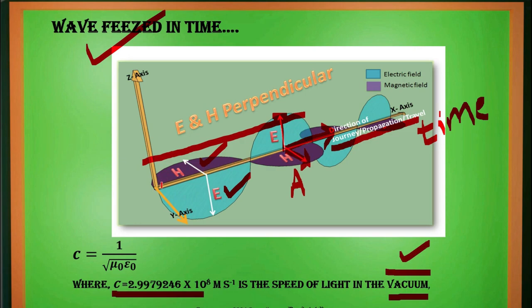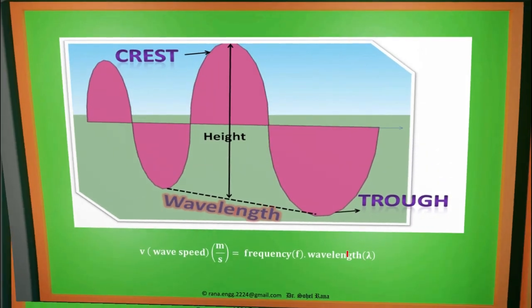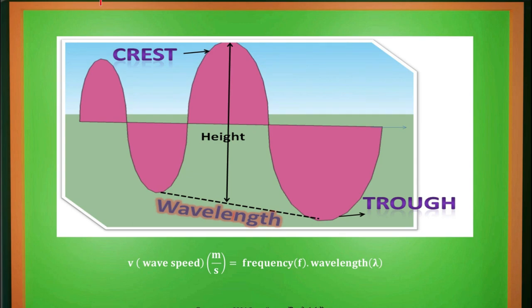When amplitude starts from zero, it keeps increasing to maximum, then goes back to zero. At one particular point, E and H both become zero, and then their journey starts again towards the peak value. Like this, a wave continuously keeps moving in space — it is not static; we freeze it only for understanding purposes. Frequency may be lower or higher. The parts of this wave include crest and trough: crest is the maximum peak in the positive direction, and trough is the maximum peak in the negative direction.